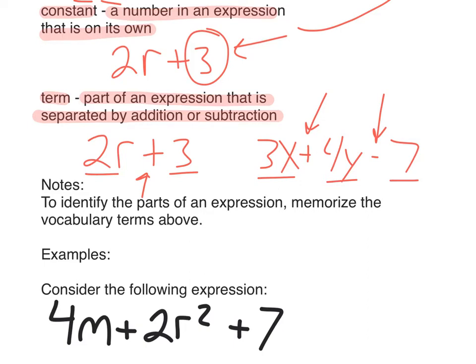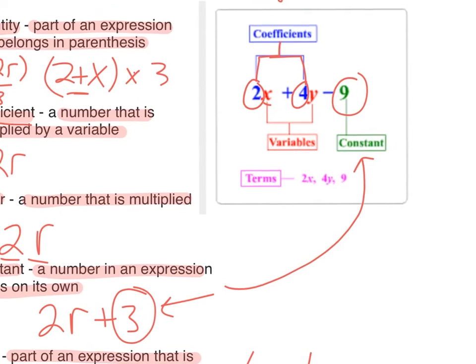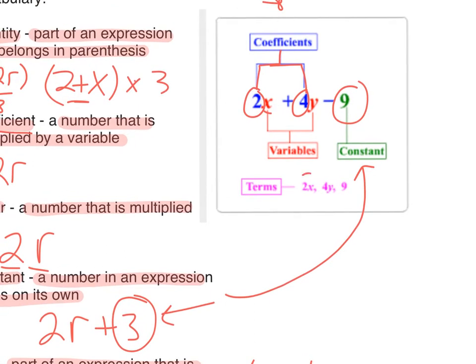So, let's look up above in the picture. The terms in that example are 2x, 4y, and 9. So, there's three of them. You can see them.